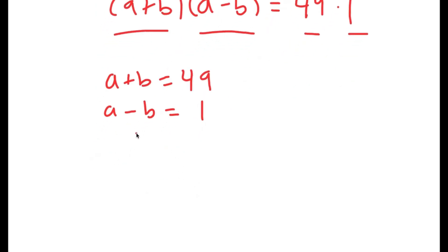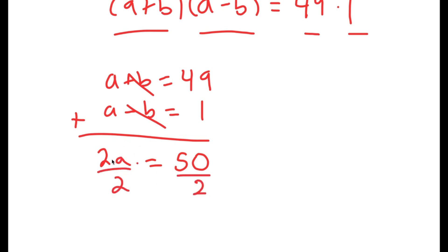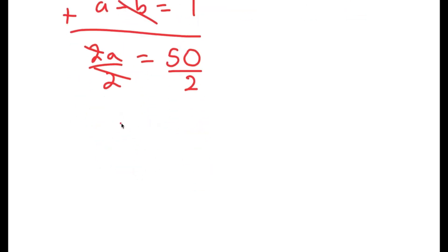What we have here is a system of equations, and I'm going to add these two equations. A plus a is 2a, b and negative b cancel out, and 49 plus 1 is 50. So I get that 2a is equal to 50, and if I divide both sides by 2, I get a is equal to 25.